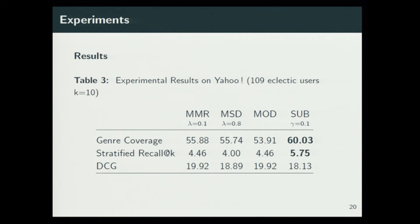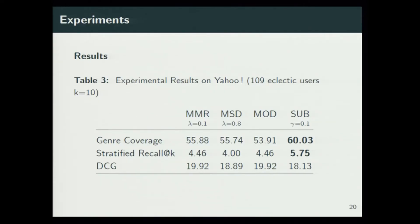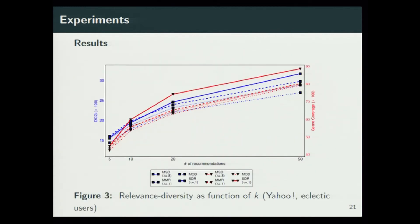We argue this is because diversity recommendation makes sense only for eclectic users. For a user who has a fixed or single interest, it doesn't make sense to recommend diverse items. So we sub-sampled 109 eclectic users, and these are the results on those eclectic users — we see significantly better results. In the corresponding graph, for different numbers of recommendations, our algorithm gives strong results as indicated by the bold blue and red lines. The blue corresponds to DCG and the red corresponds to general coverage, which is a coverage metric.